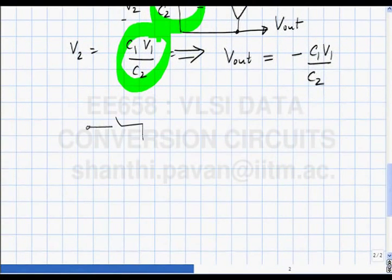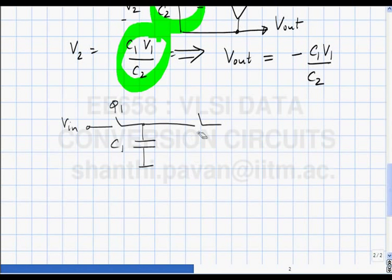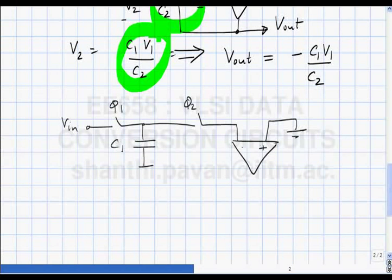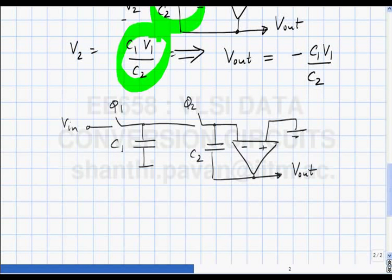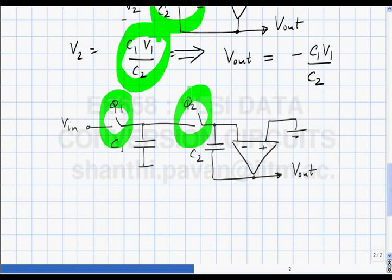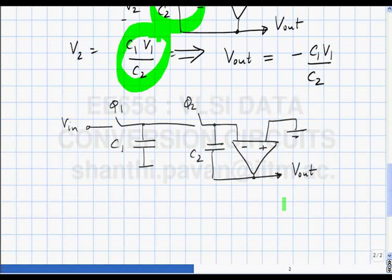Drawing the circuit: if I want to sample an input, on phi1 I sample the input onto C1. On phi2, I connect it to the infinite capacitor C2. Going step by step: first close phi1 so C1 holds C1·Vin; open phi1; then close the phi2 switch so all charge gets onto the infinite capacitor. The output voltage is -C2/C1 times V1.